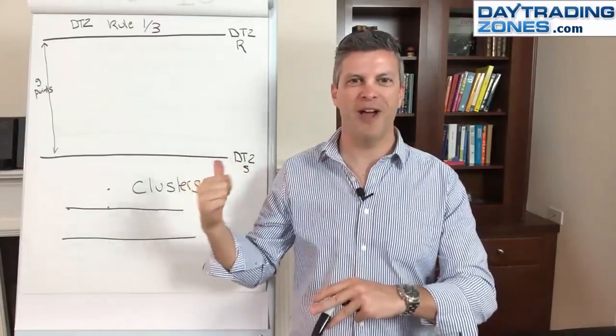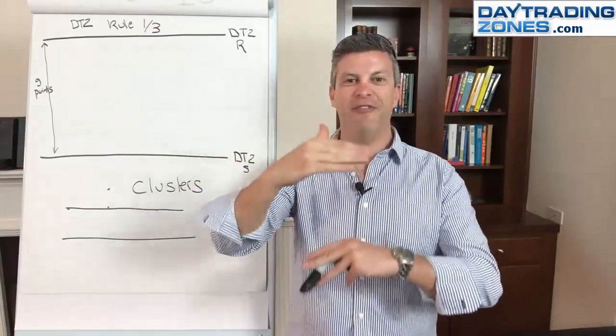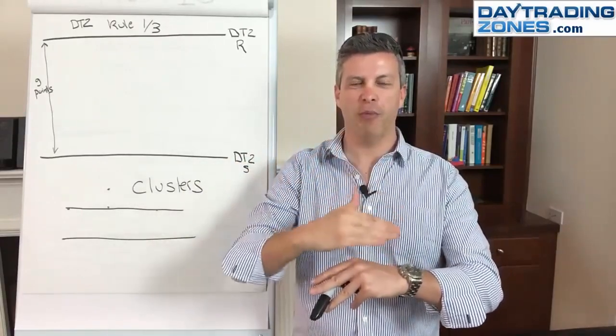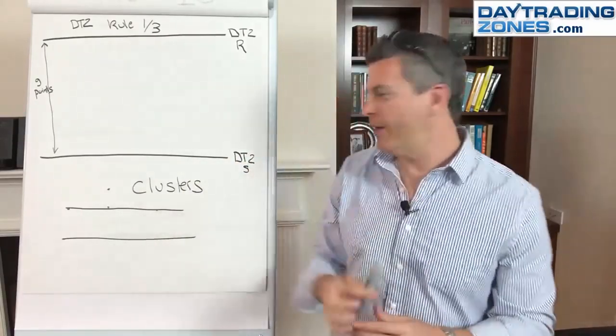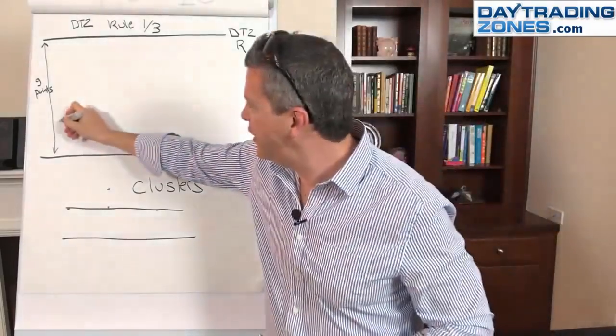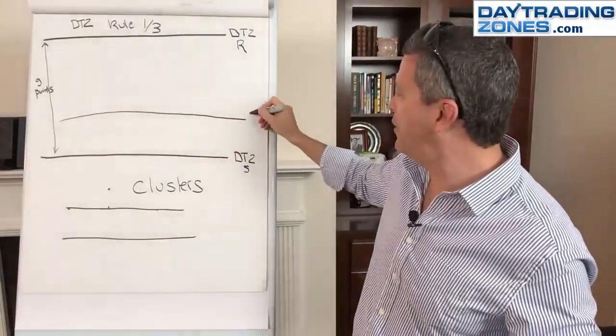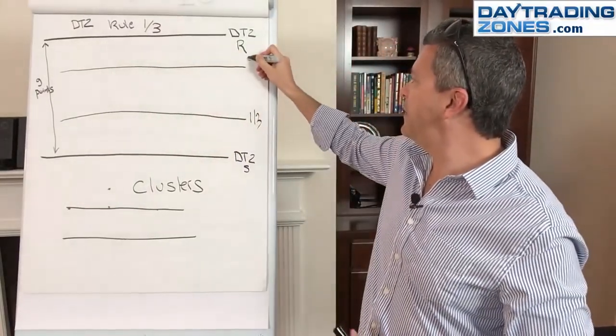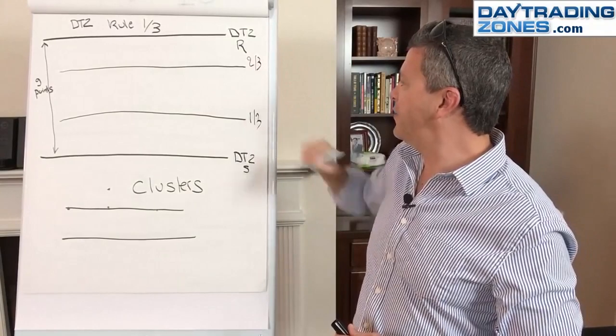So in this example, I have a nine point range. Divide that range into thirds, one third, one third. So in this case, three points, three points, three points. So let me show you. Let's say the first third is here, right? Second third is here, right?